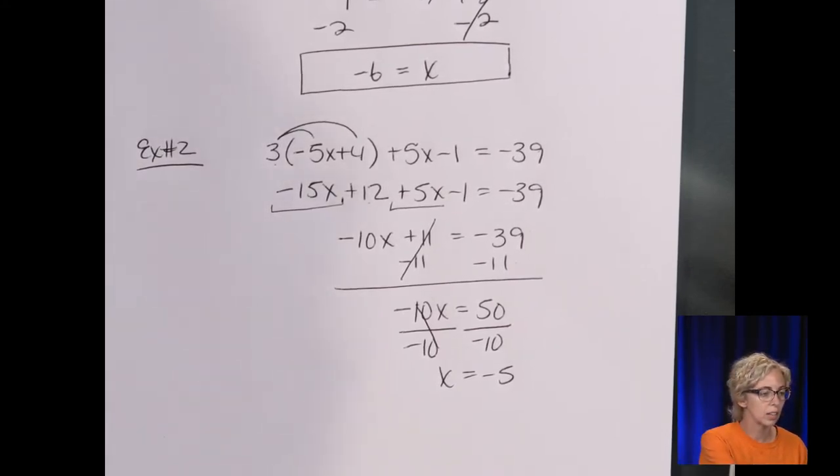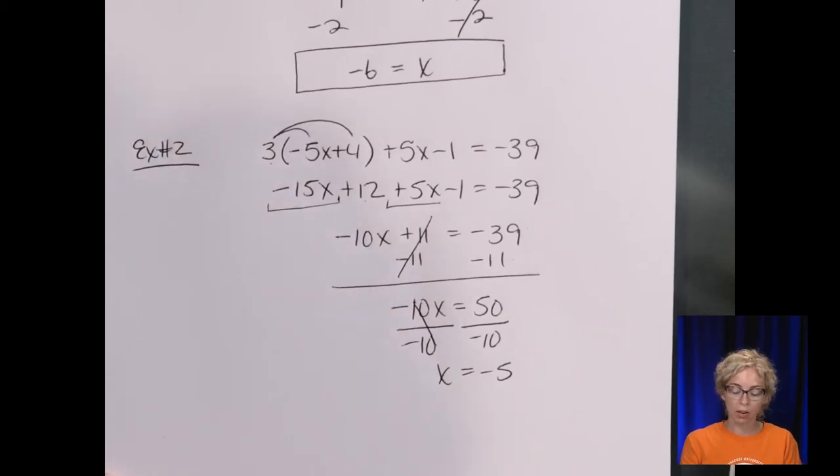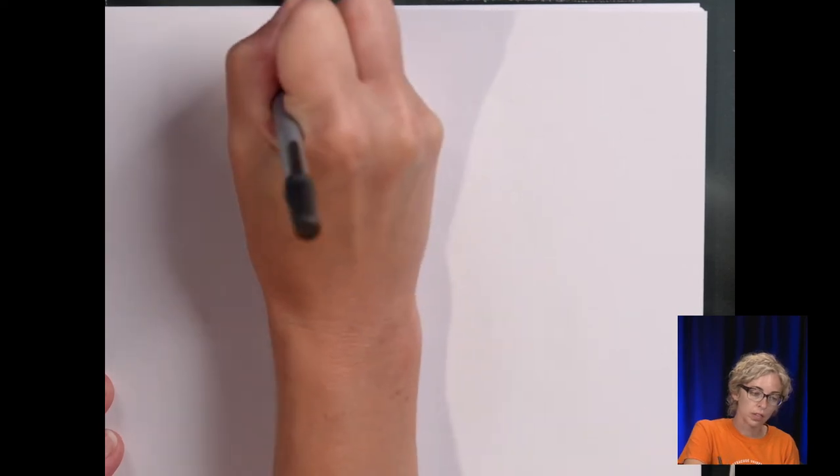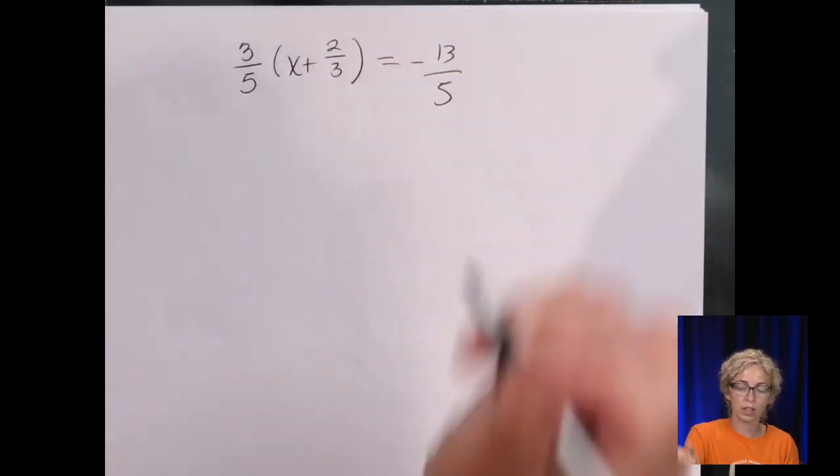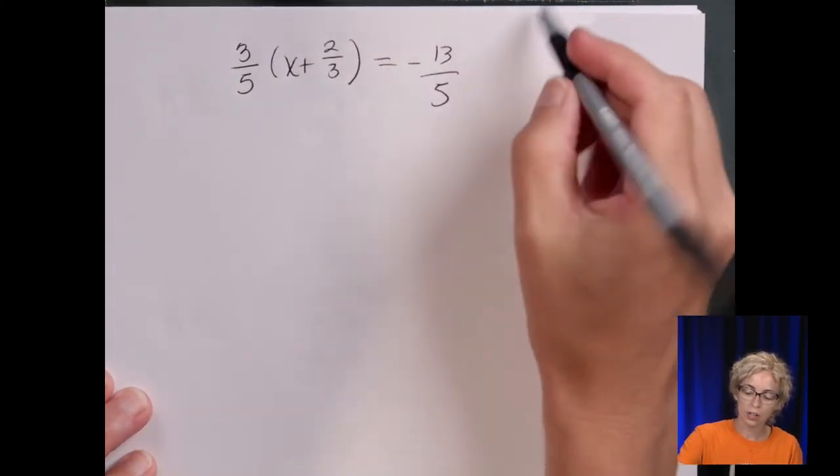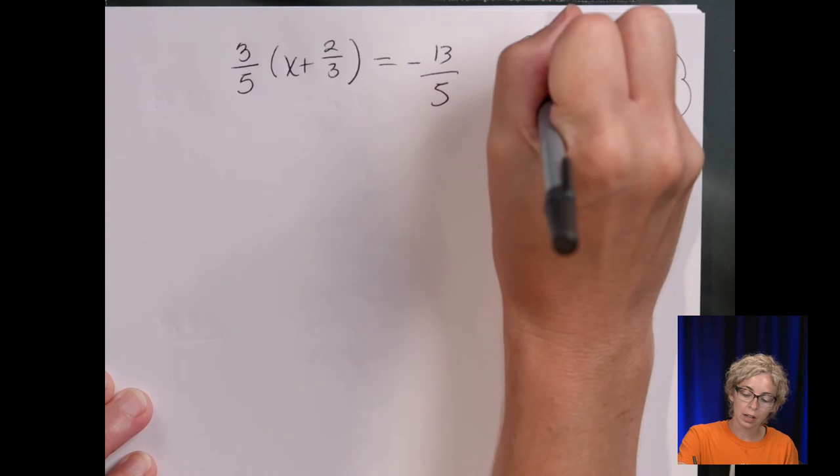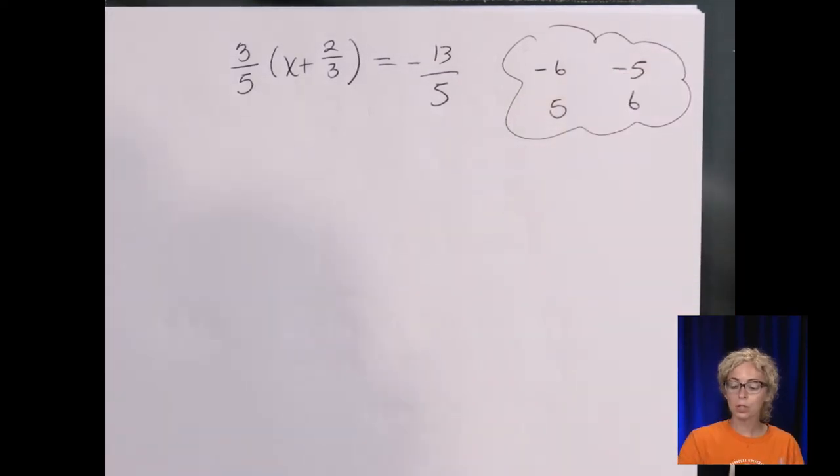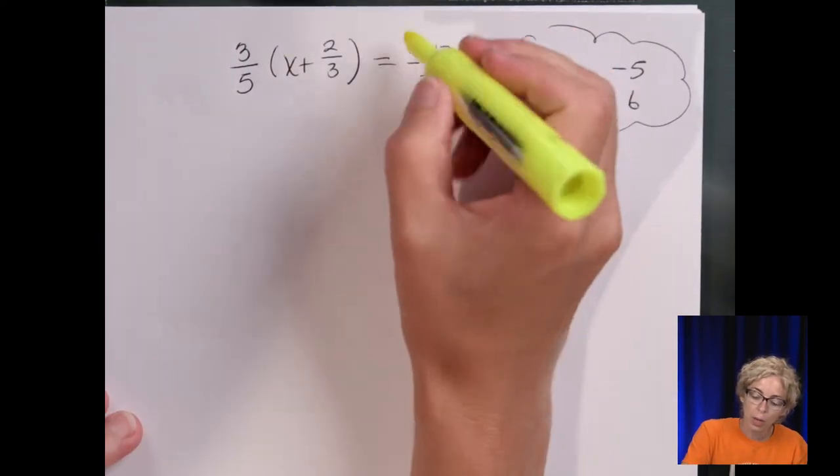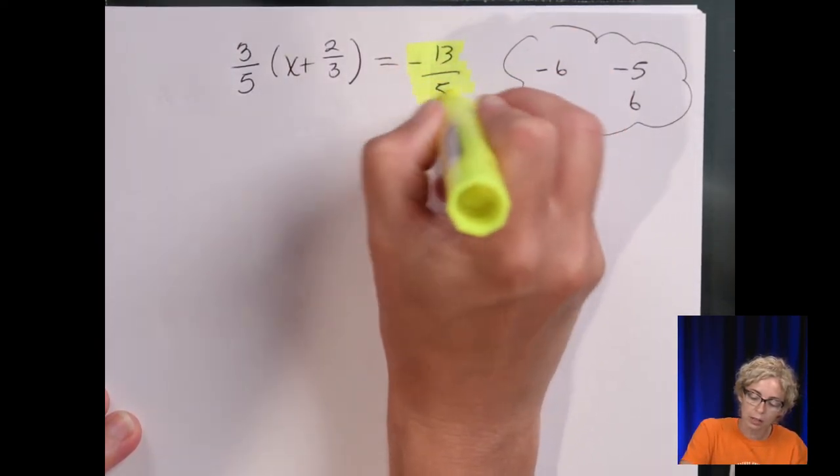All right, so in our next section, we have equations with fractions. Let me flip to a new page. The example says which value of x satisfies, so (3/5)(x + 2/3) = -13/5. So when it's multiple choice, and here are your answer choices. I'll put them in a bubble. So it can be -6, it can be 5, it can be -5, and it can be 6. So what I would do is first, you can go ahead and solve, but when it gives you the choices, you can plug them in and more or less do the check.